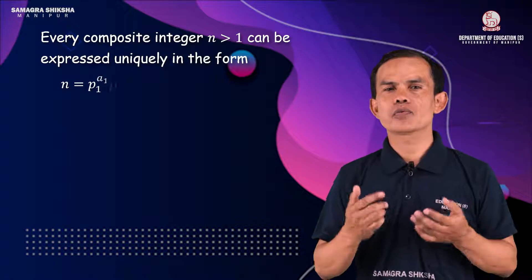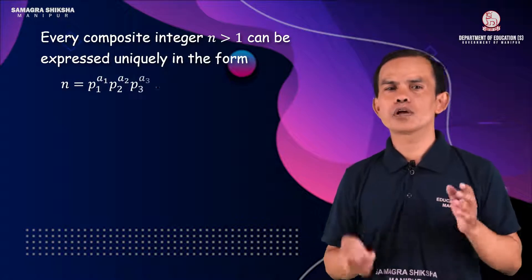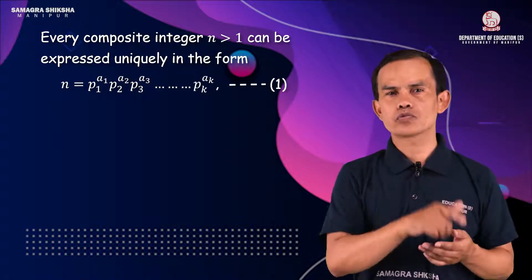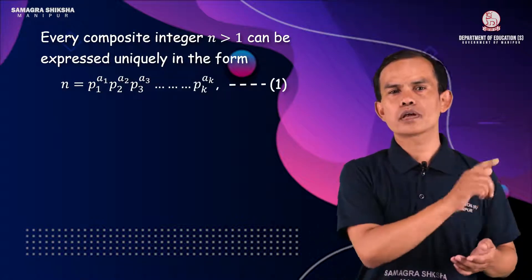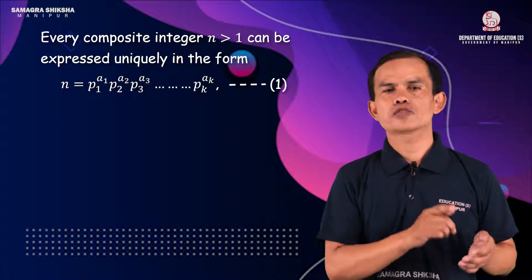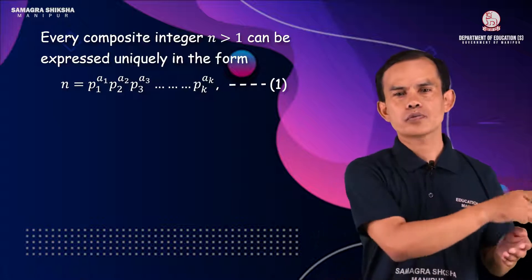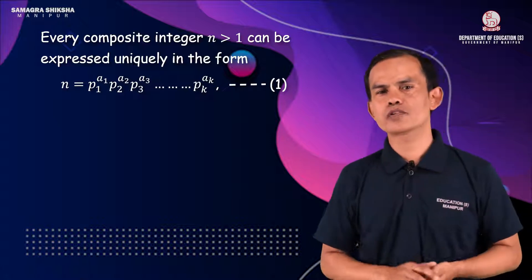In general, any number N can be written as N = P1^A1 × P2^A2 × P3^A3 × ... × Pk^Ak, where P1, P2, P3, ..., Pk are distinct prime numbers and A1, A2, ..., Ak are positive integer exponents.